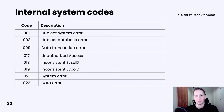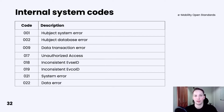Hubject distinguishes between four different types of status codes. The first type is internal system codes. Here we can include information that an error is about the Hubject system, Hubject database, data transaction, unauthorized access, inconsistent FCO ID, inconsistent EVSE ID, or more general system or data errors.